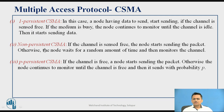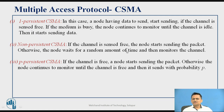The second approach is non-persistent CSMA. Here, you initially check whether the channel is idle. If nobody is transmitting, you transmit the data. But if somebody is transmitting, instead of continuously monitoring the channel, you wait for a random amount of time and then check again. If network load is low, after that random time the probability of the channel being idle is higher, and you can transmit. This is also called zero-persistent CSMA.